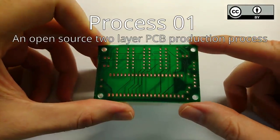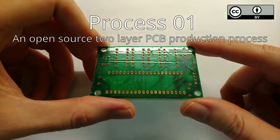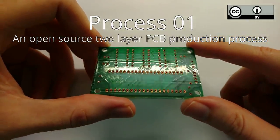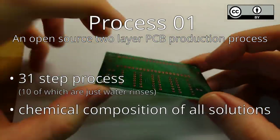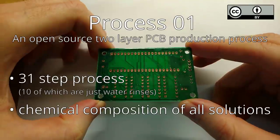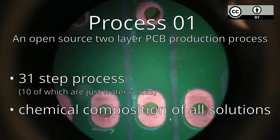To fill this gap, I am presenting Process 01, an open source PCB production process. Process 01 is released under a Creative Commons license and is composed of a step-by-step process description, currently made of 31 steps, about a third being simple water rinses though, as well as a description of how to prepare all the chemical solutions required.